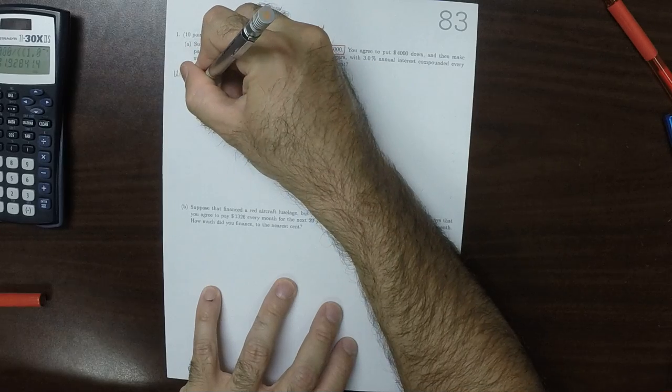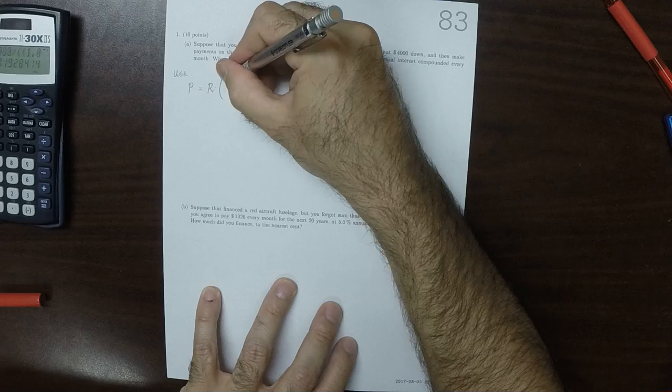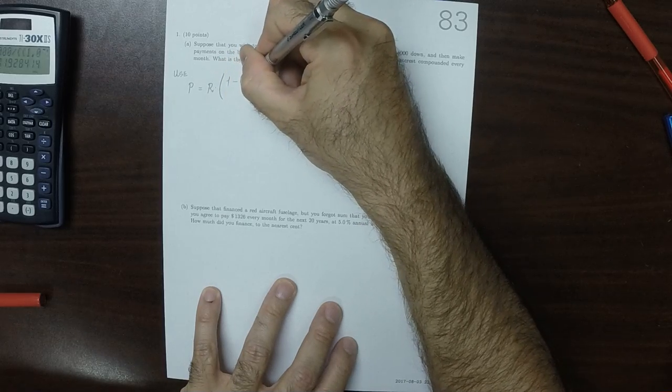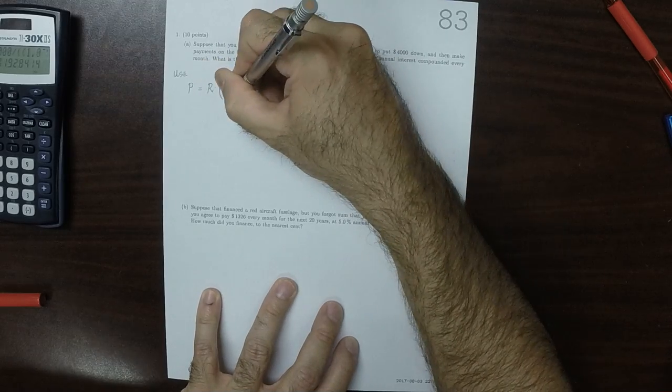The formula P is equal to R multiplied by 1 minus 1 plus i to exponent negative n divide by i.